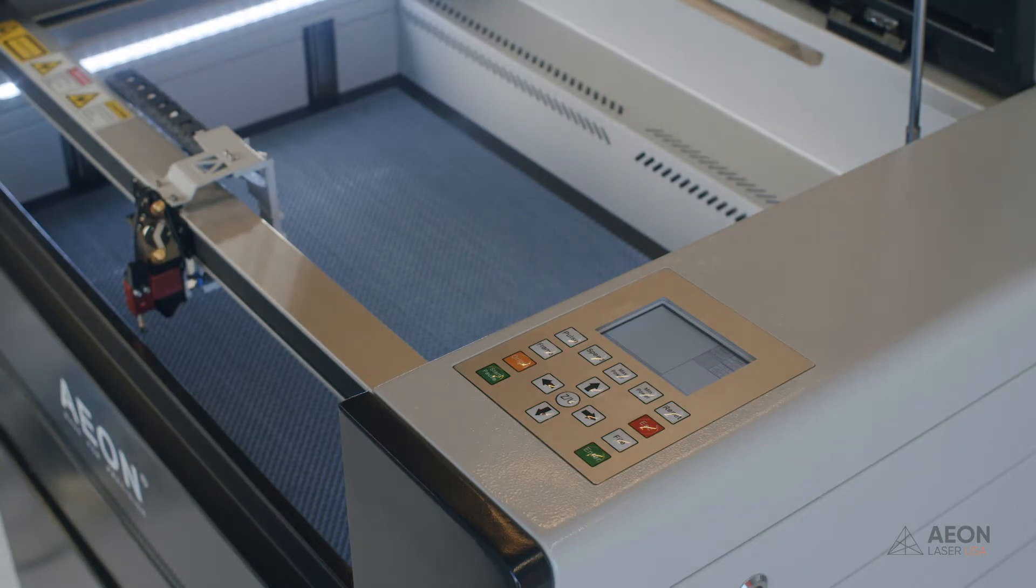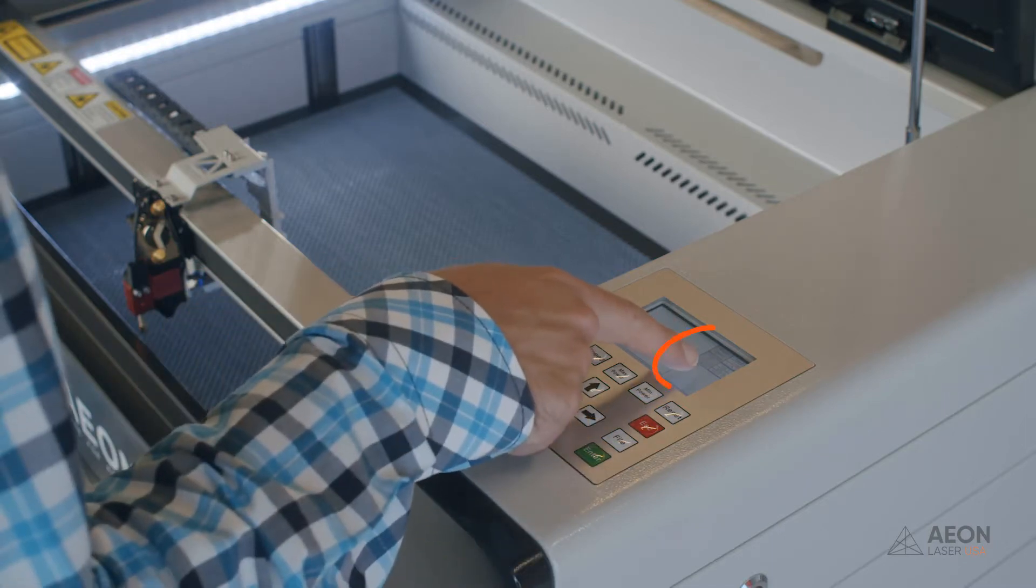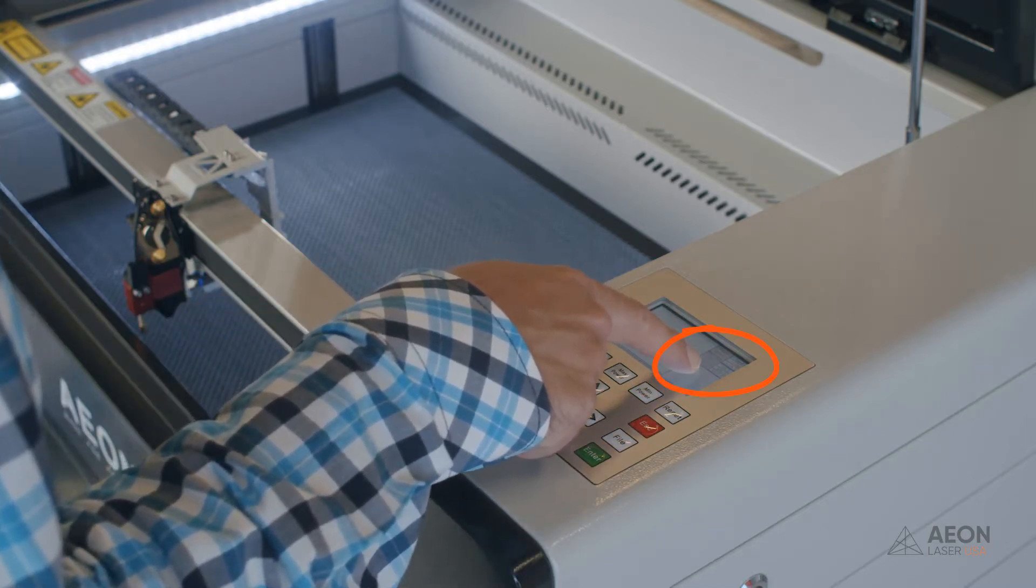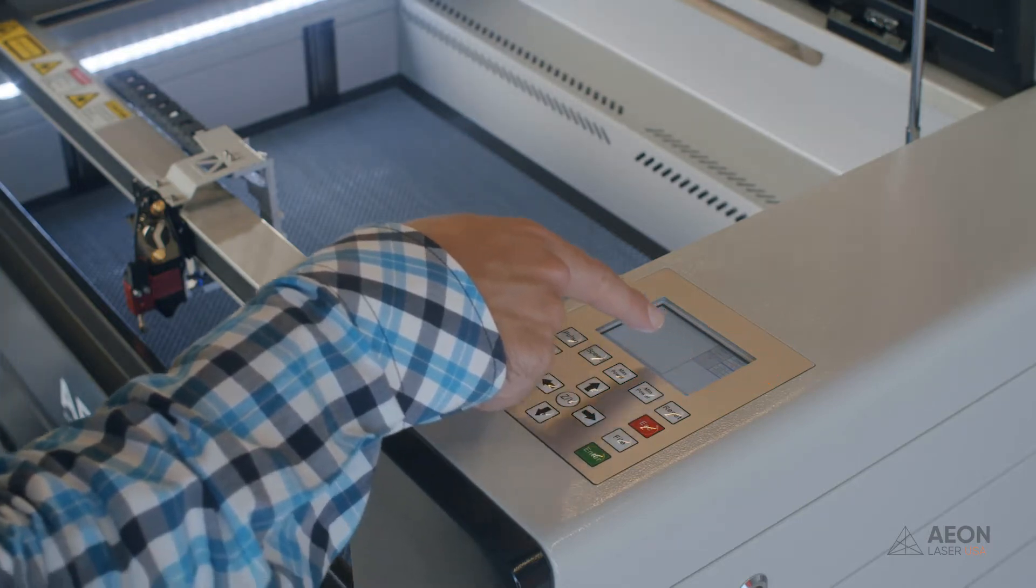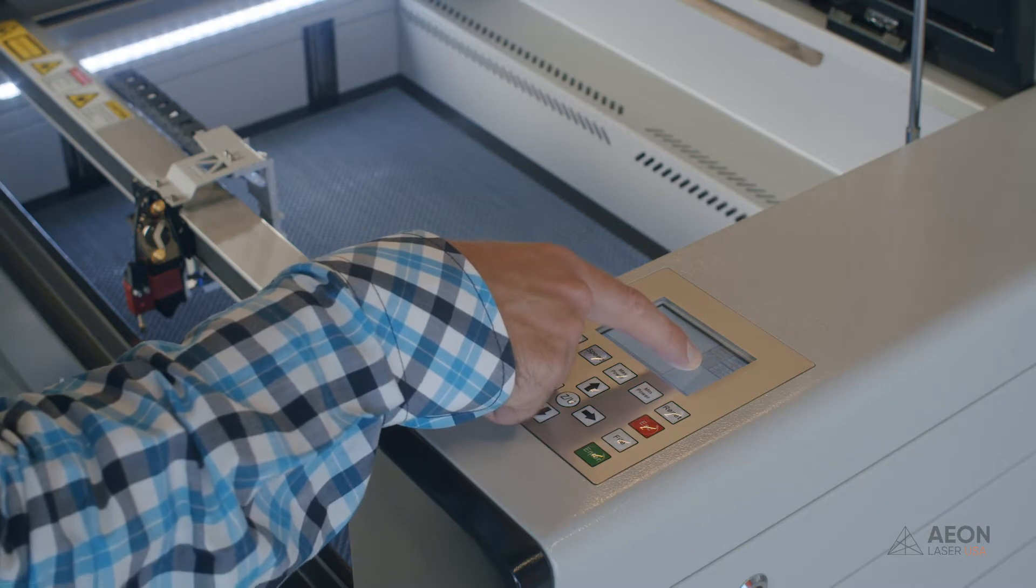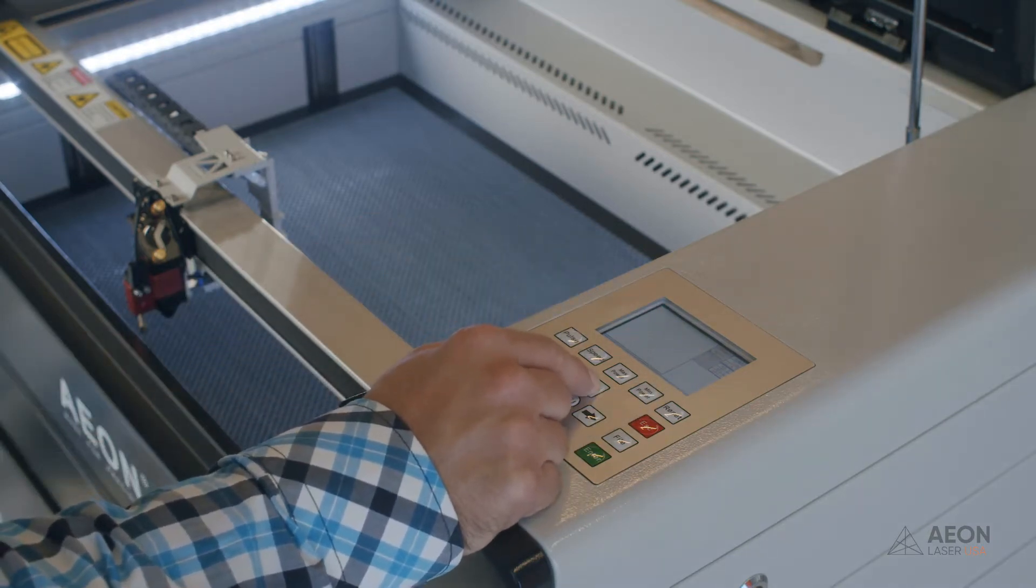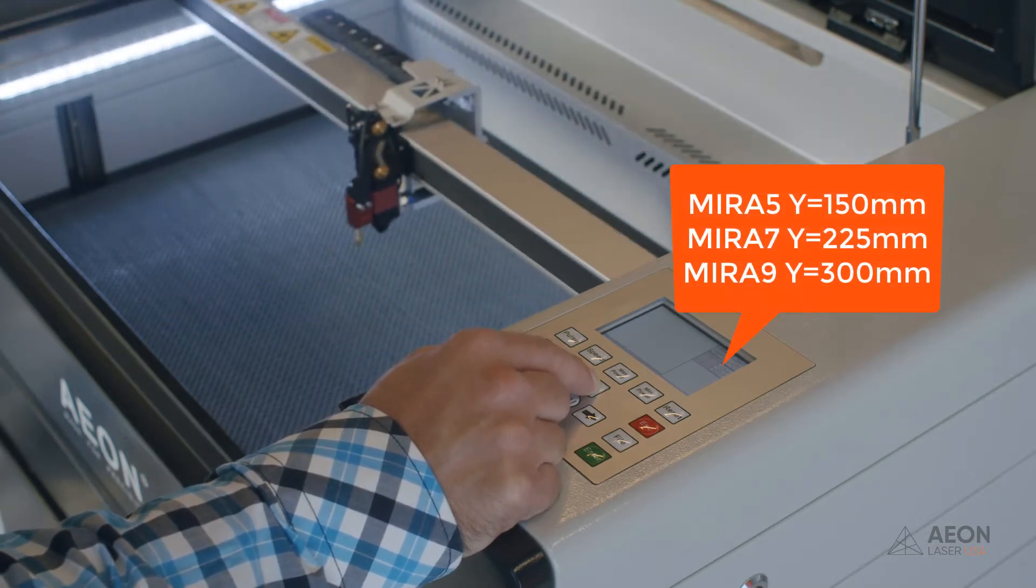But what we're going to do first is we're going to move the gantry to the middle of the machine. If you have a Mira 7, that's going to be 225 millimeters on your y-axis. You can see that on the keypad. So if I'm all the way to the front now, my keypad is reading 450. And if I jog midway, I should end up on 225.